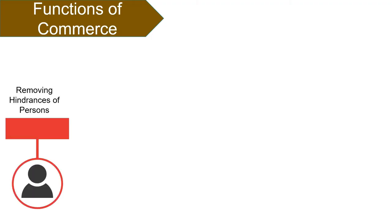The first function is removing the hindrance of persons. Here, persons means economic agents, i.e. buyers and sellers. Commerce provides a proper platform through trade. Trade offers an organized market where buyers and sellers can come in contact with each other and perform transactions.